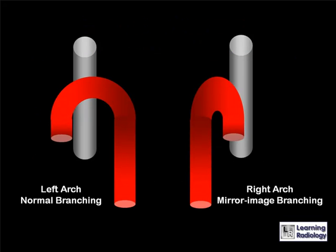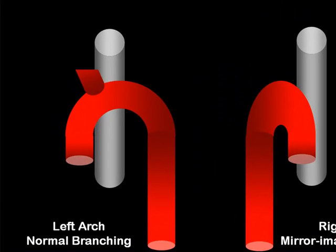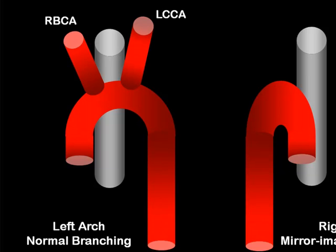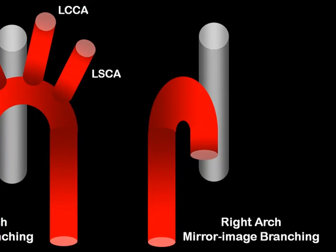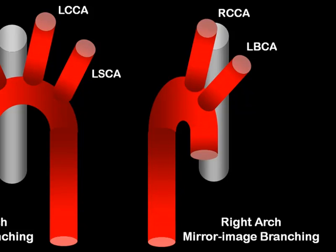This is what the branching of a mirror image right aortic arch looks like. First, here's the normal arch: right brachiocephalic artery, the left common carotid artery, and the left subclavian artery as its three major branches. For a right arch with mirror image branching, the first branch off the arch is the left brachiocephalic artery, the second is the right common carotid artery, and the third is the right subclavian artery.